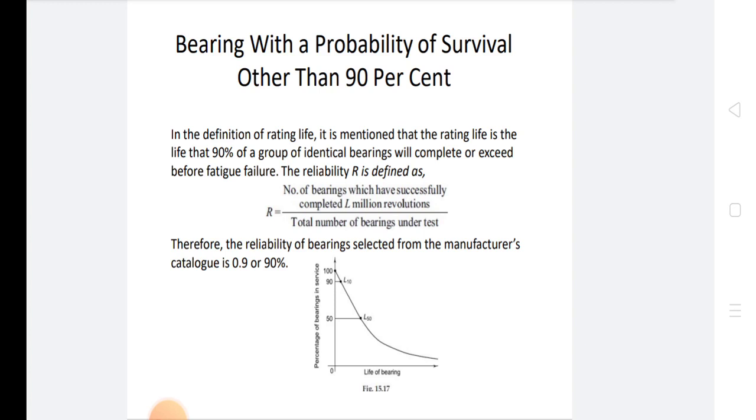R equals number of bearings which completed L million revolutions upon total number of bearings under test. Therefore, the reliability of bearings selected from the manufacturer's catalog is 0.9 or 90%.